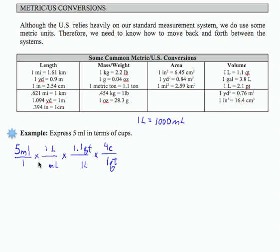So 1 liter is 1,000 milliliters. So if I multiply here, I have 5 times 1.1 times 4 divided by 1,000. So that gives me 22 divided by 1,000, which gives me .022, and that is cups, because all of my units will cancel here.